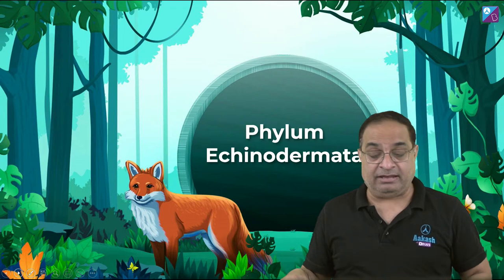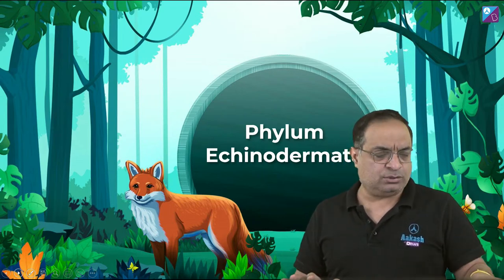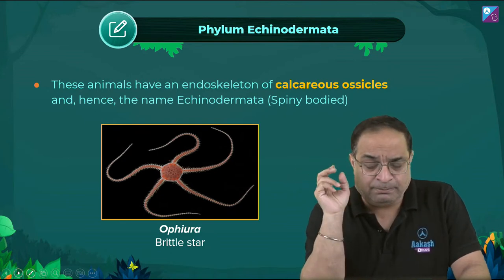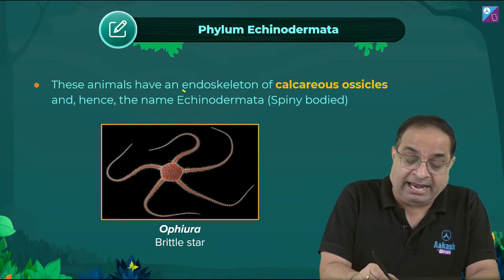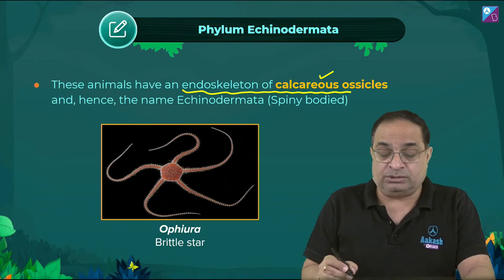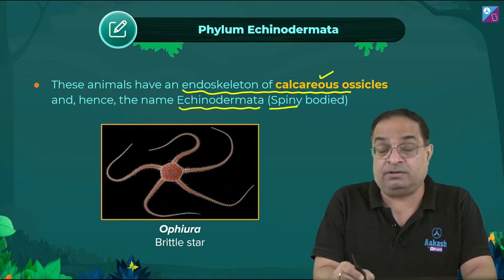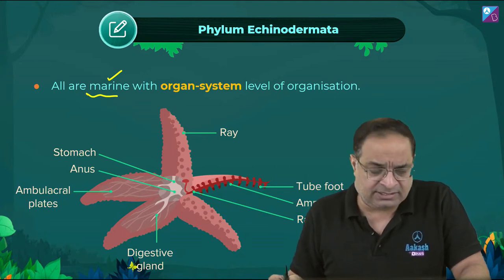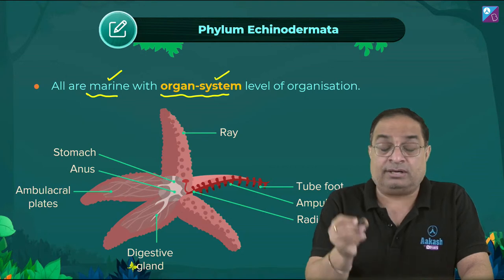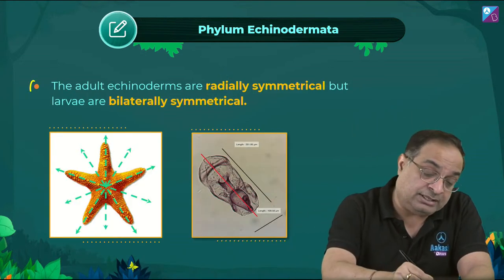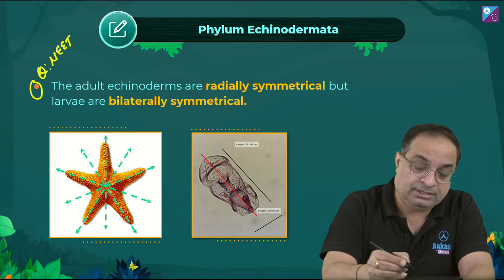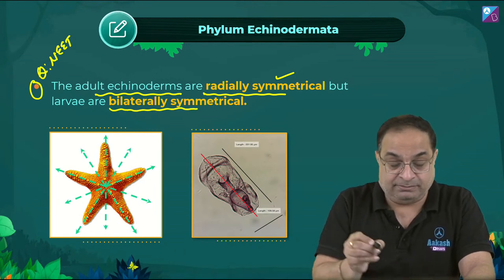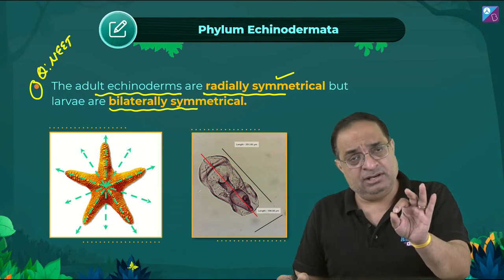Next phylum: Phylum Echinodermata — interesting phylum. These are exclusively marine animals, bottom dwellers in the sea. They have an endoskeleton of calcareous ossicles — that's why they are called echinodermata (spiny skinned animals). They have organ system level of organization. Adult echinoderms have radial symmetry, but their larvae are bilaterally symmetrical — this is an important point that can be framed as a question.